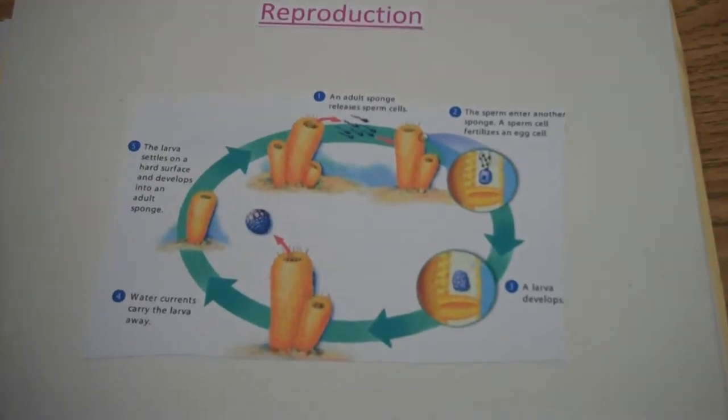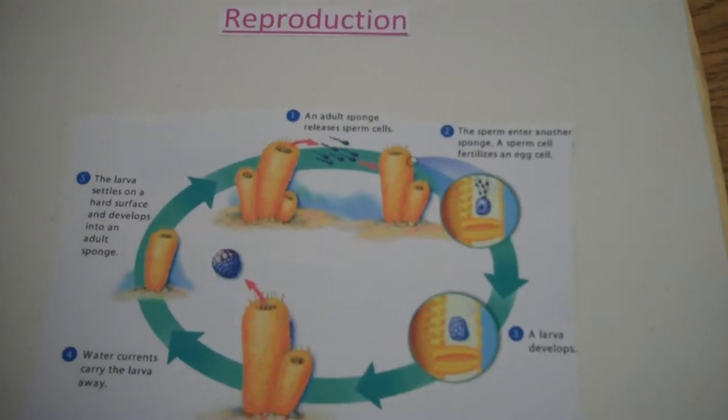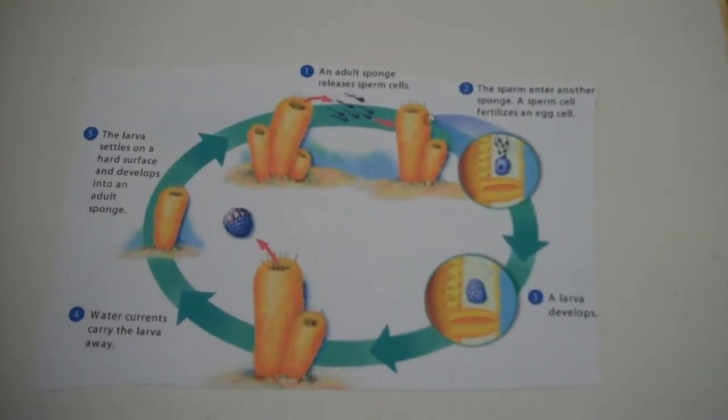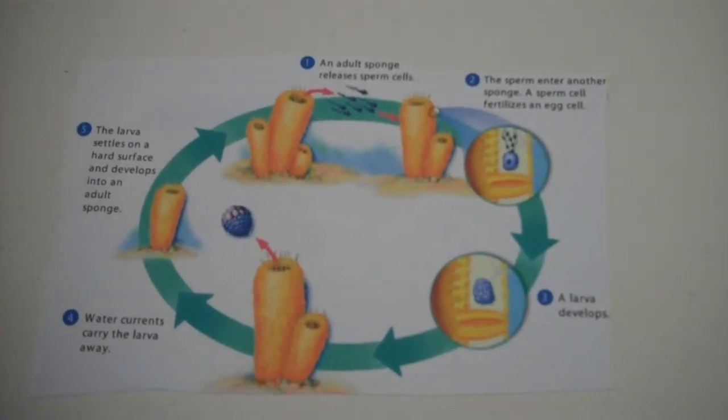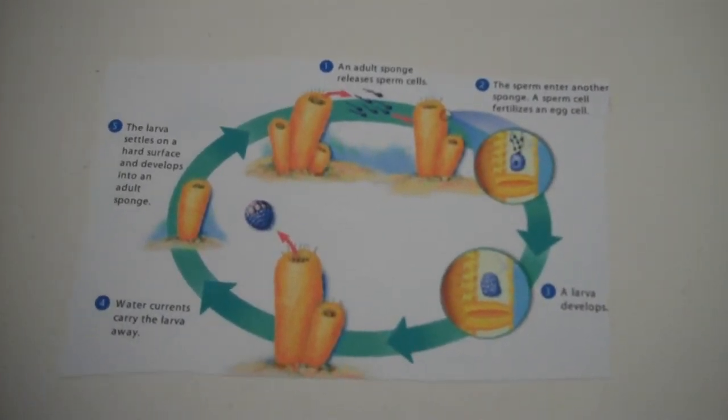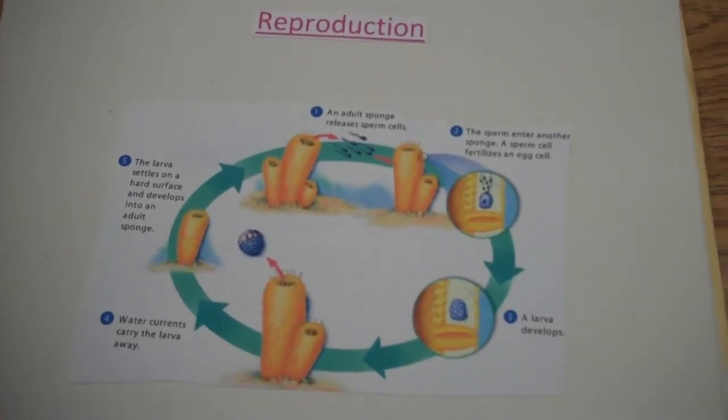One: an adult sponge releases sperm cells. Two: the sperm cell enters another sponge, and a sperm cell fertilizes an egg cell. Three: the larva develops. Four: water currents carry the larva away. Five: the larva settles on a hard surface and develops into an adult sponge.